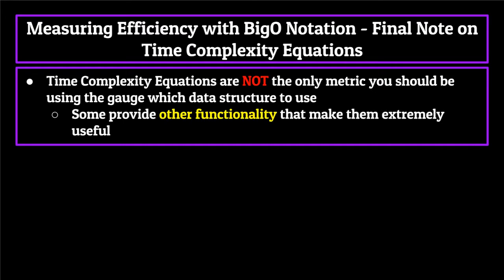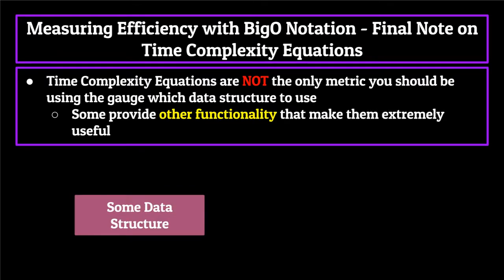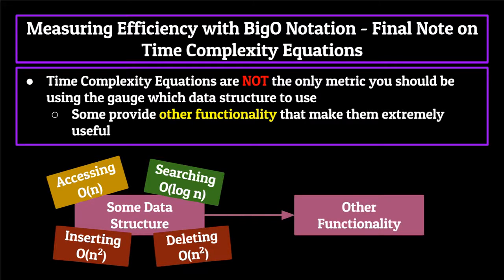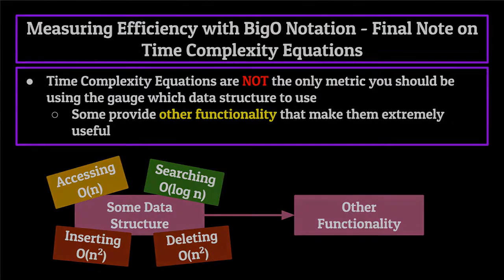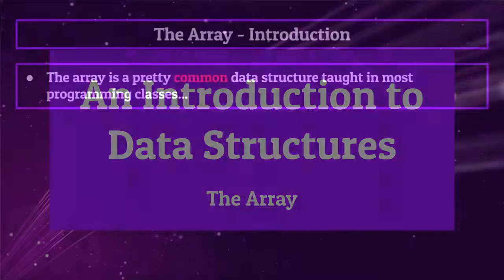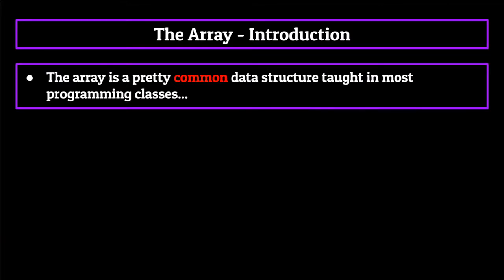These time complexity equations are not the only metric you should be using to gauge which data structure to use. As we get deeper into this series, you'll see that we might have data structures which don't seem that efficient based on their time complexity equations, but provide some other functionality or feature which makes them extremely useful. Now that we have some knowledge on how we actually grade data structures in terms of efficiency, let's hop into our very first data structure. The first data structure we're going to be covering is the array.